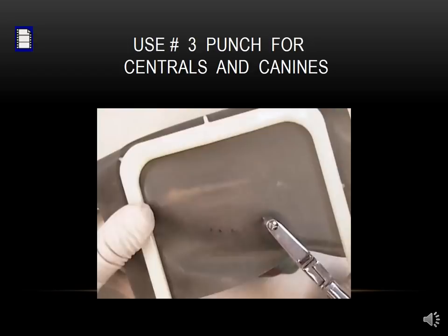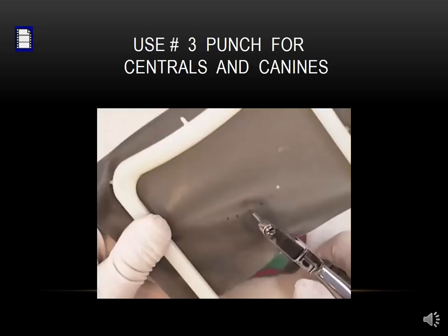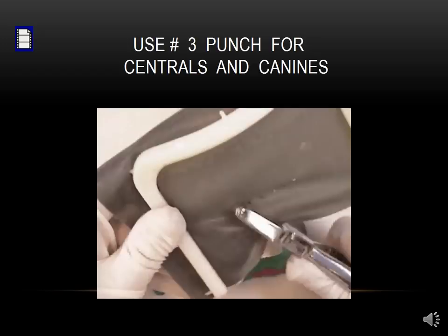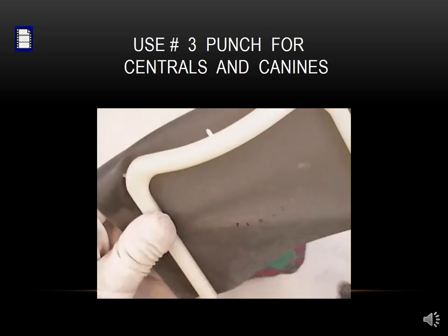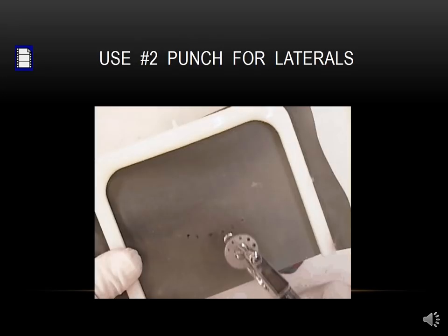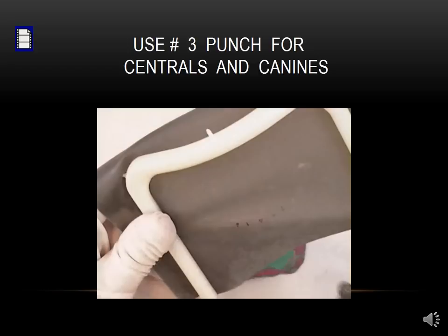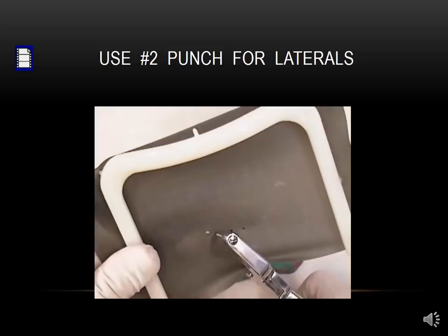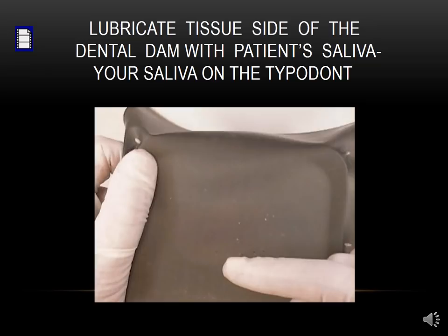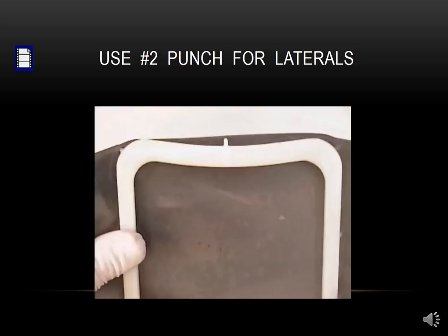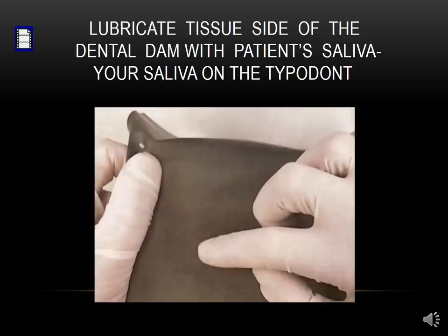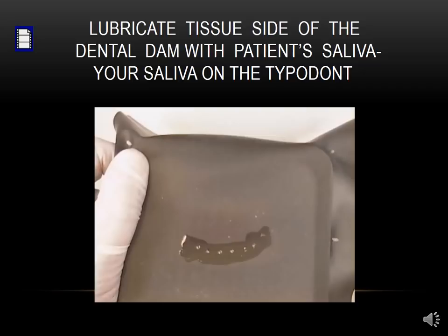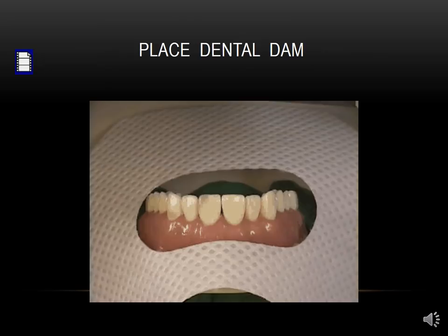On anterior teeth, I recommend a number three hole punch for the centrals and canines, then go to a number two, which is smaller, for the laterals. This is a heavy gauge rubber dam, which is what we want to use when doing diastema closure so it retracts the tissue. Then we lubricate the tissue side of the dental dam with the patient's saliva — if you're a dental student working on a typodont, it's okay to use your own. Then we place the dental dam.